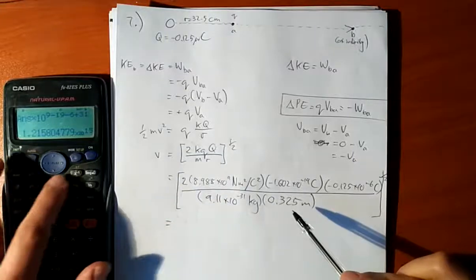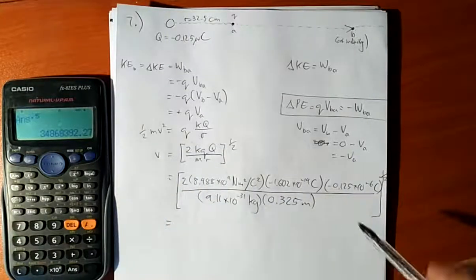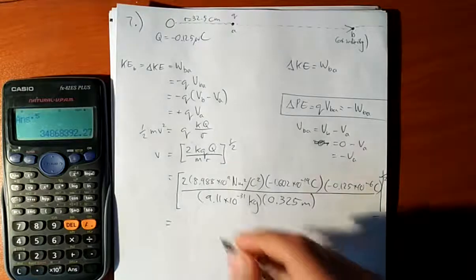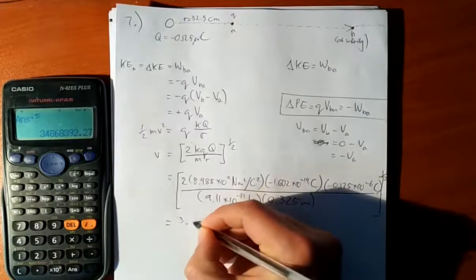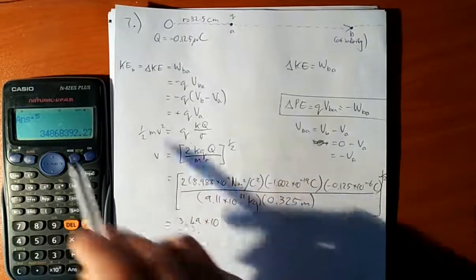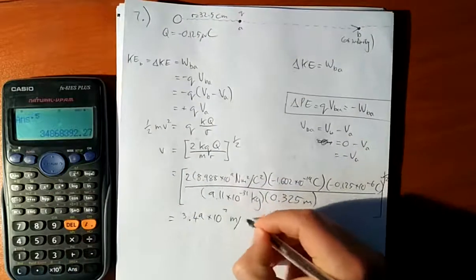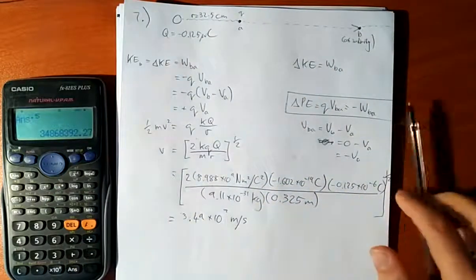9 minus 19 minus 6 plus 31. And I have to work out the square root of that. Assuming we make no mistake, it's equal to this. And I'll also provide three significant figures. So, 3.49 times 10 to the 6 meters per second. And there you have it.